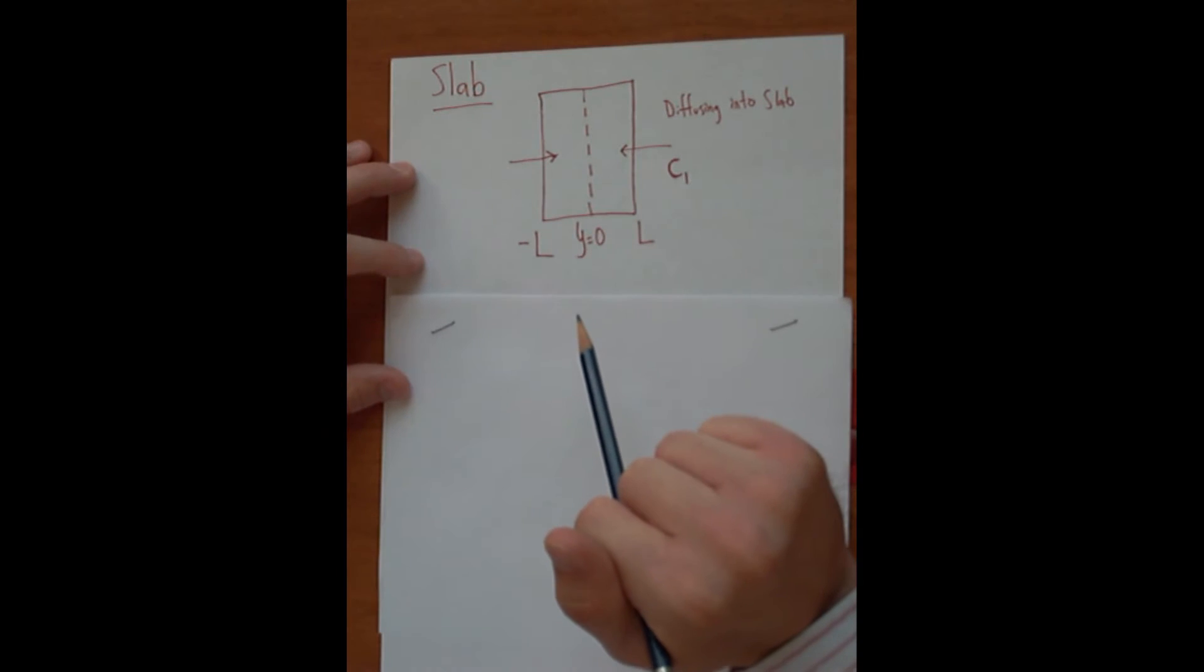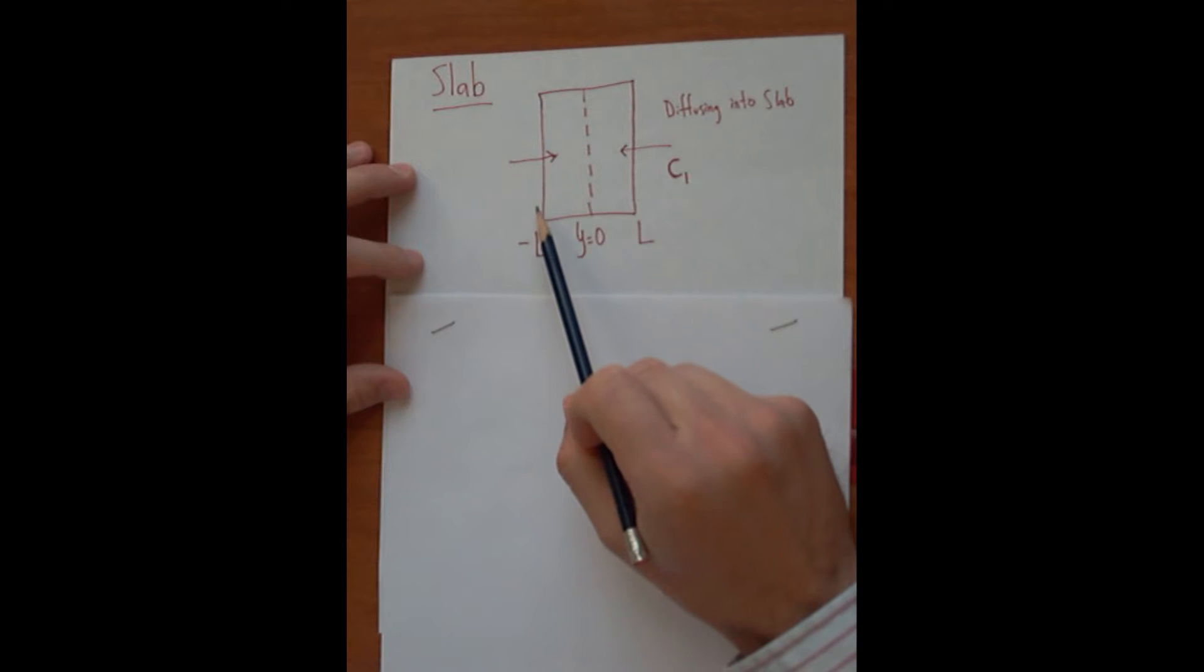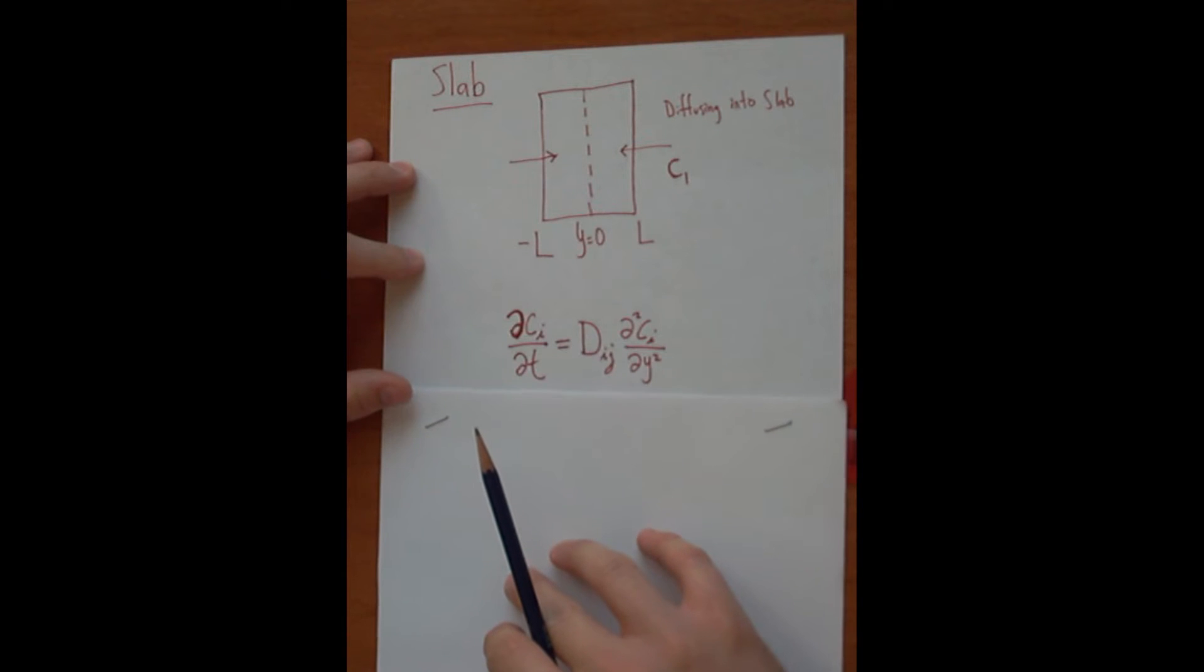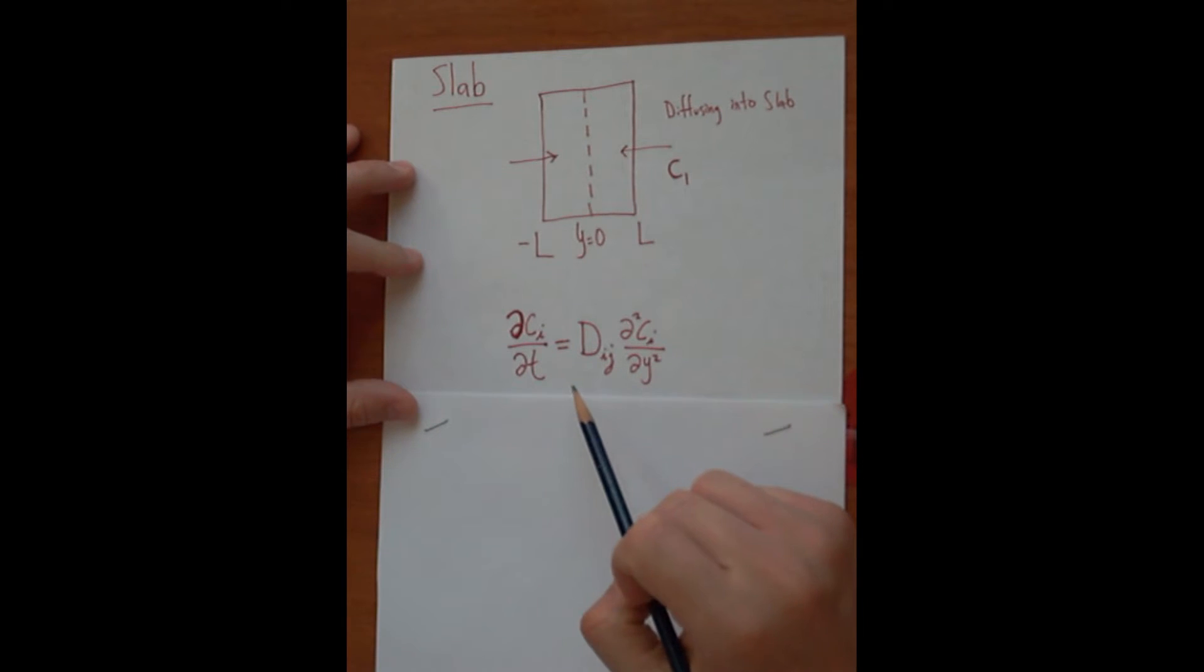So first of all, let's think about what our governing equation would be to figure out what the diffusion would be into the slab so that we can figure out our concentration profile within the slab over time. To do this, we can use Fick's second law. So this is unsteady diffusion in rectangular coordinates, and you can see that there's no convective terms or reaction terms because this is just going to be simple diffusion.